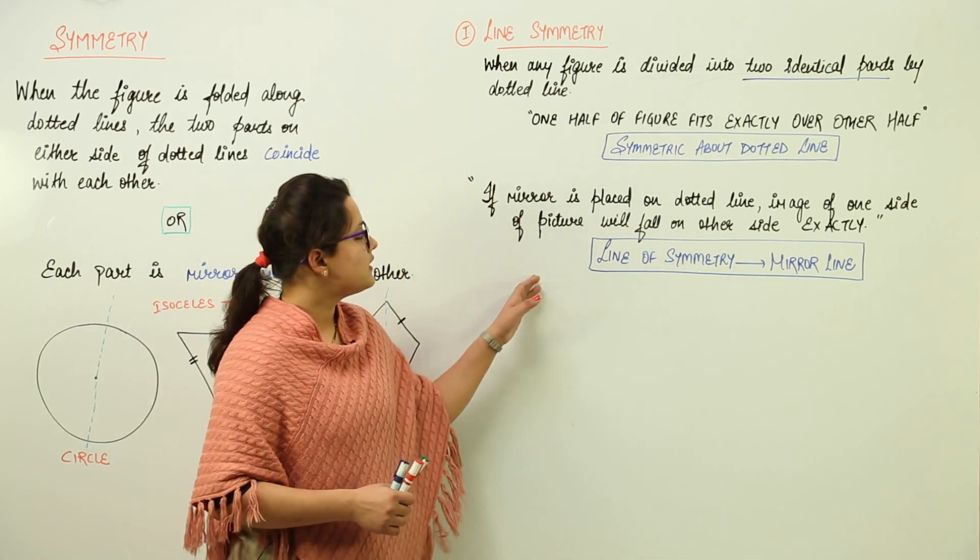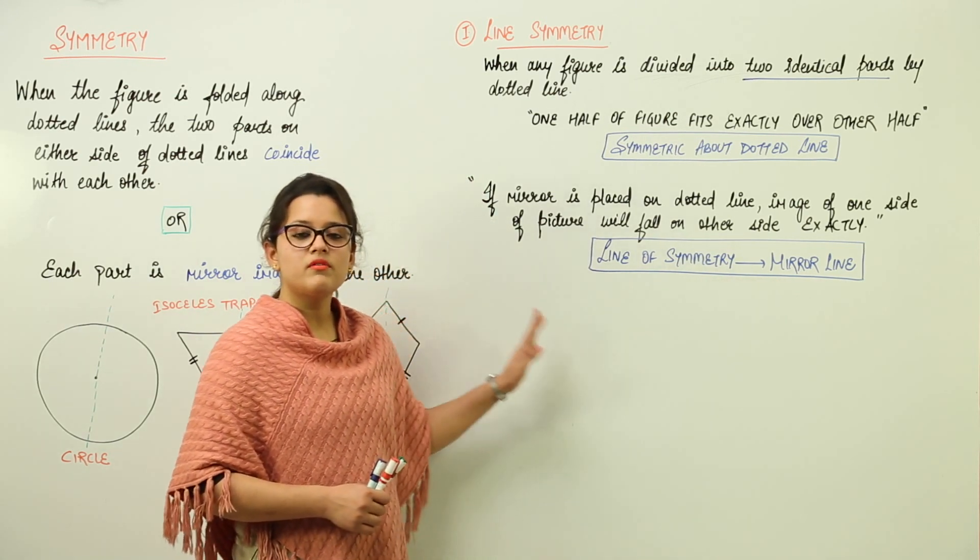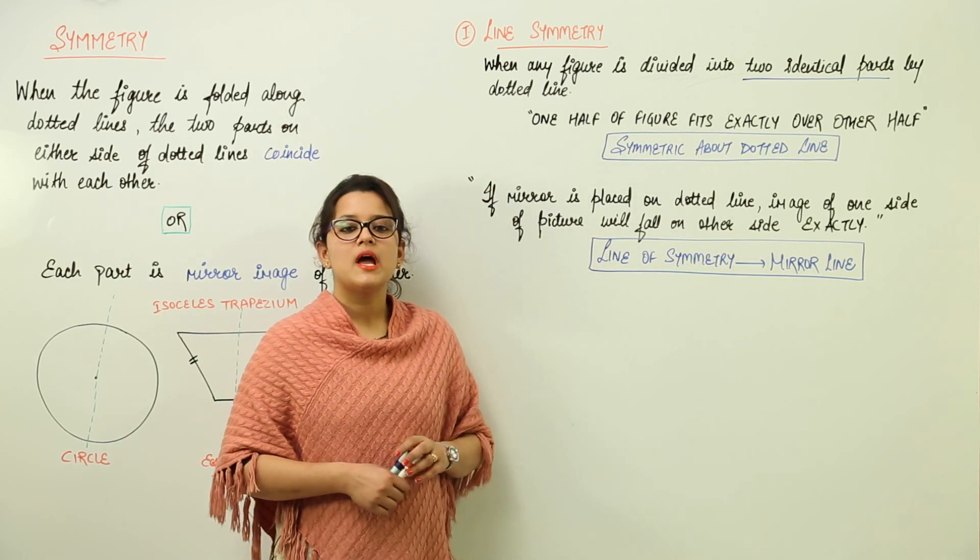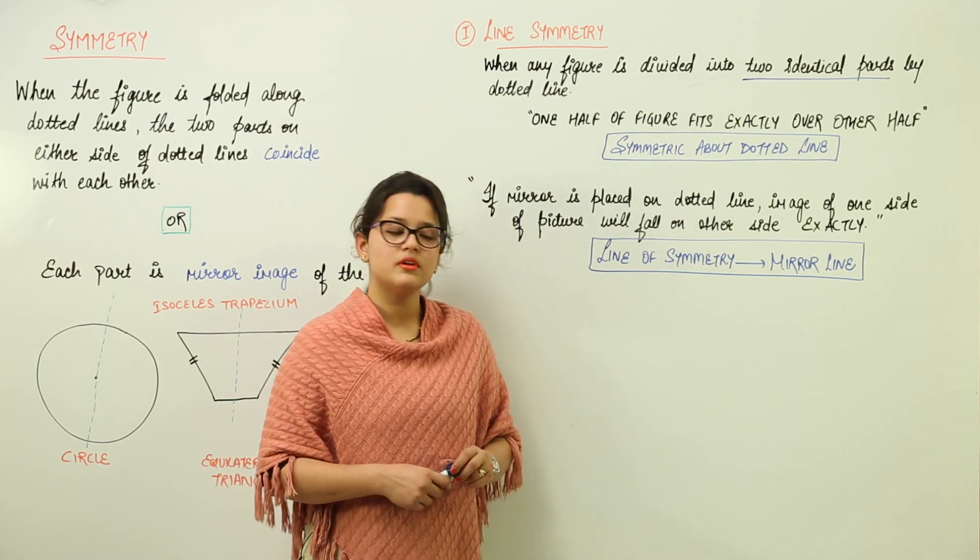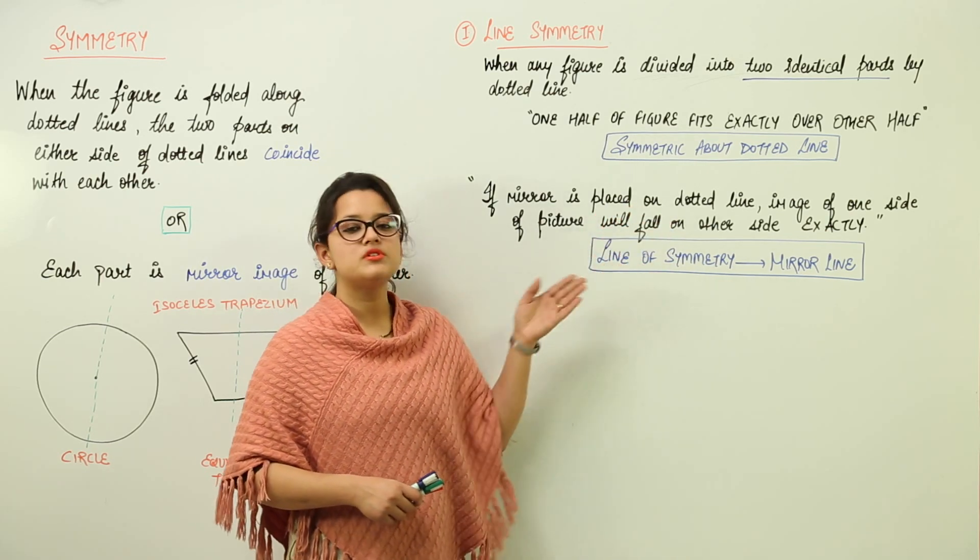We can say that the line of symmetry can be considered as a mirror line. You have a dotted line that is known as the line of symmetry also, and you can consider it to be a mirror also. We can have a dotted line, line of symmetry, or mirror line.